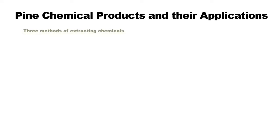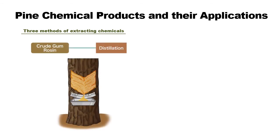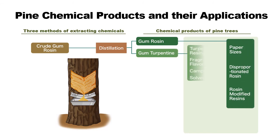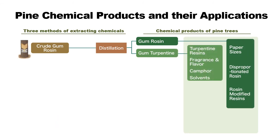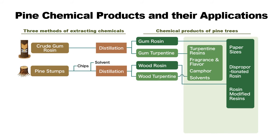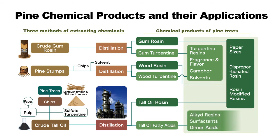Three methods are employed to extract pine chemicals from the pine tree. The oldest and most well-known technique is to collect exuded crude gum by tapping live pine trees, then separating it into gum rosin and turpentine by distillation. The second method involves extracting wood rosin from pine stumps using solvent. The third method is the distillation of tall oil, a by-product of the pulp-making process, which produces tall oil rosin and tall oil fatty acids.